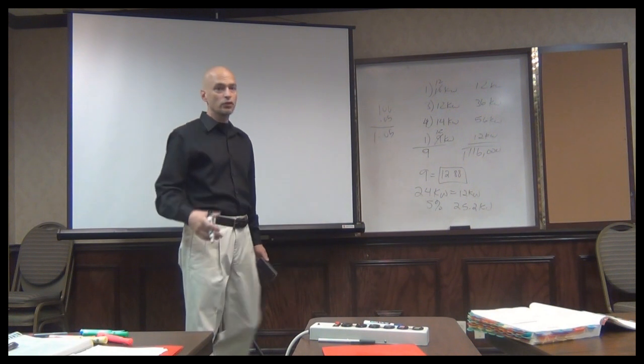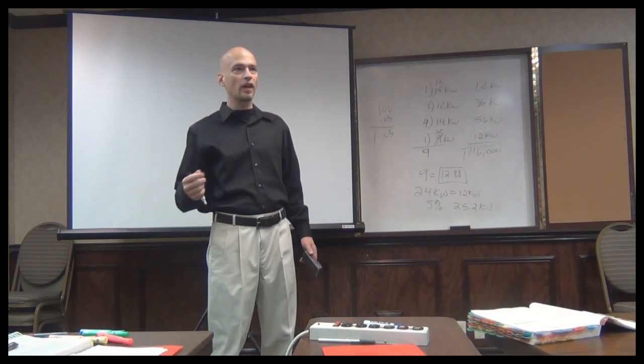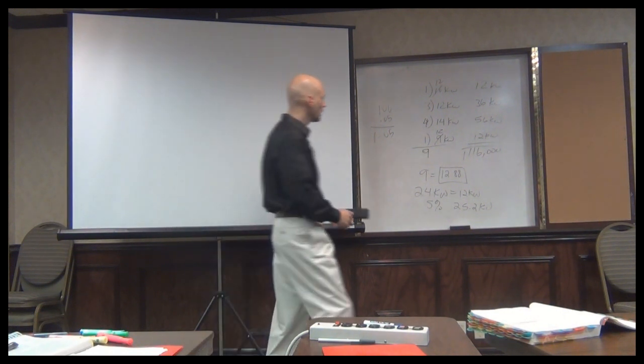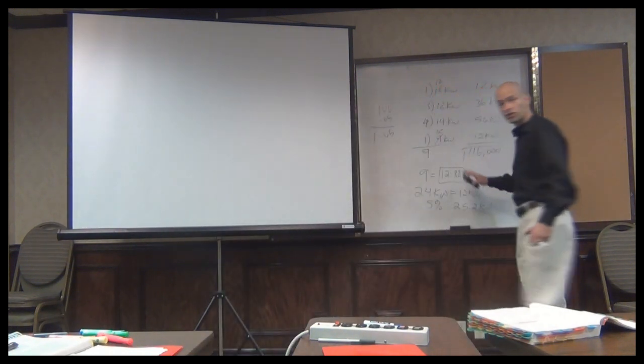If you did it individually, if you took 24 kilowatts times 0.05, then you'd have to turn around and add the 24 kilowatts back. So it's just a little shortcut. Anybody have any questions on this one?